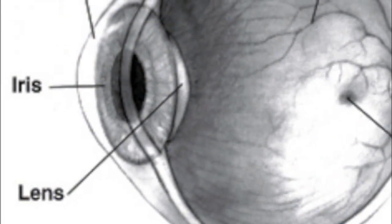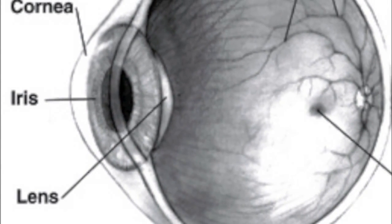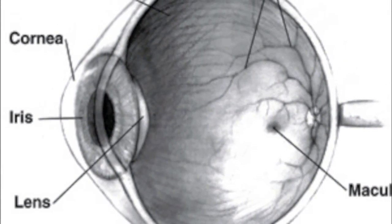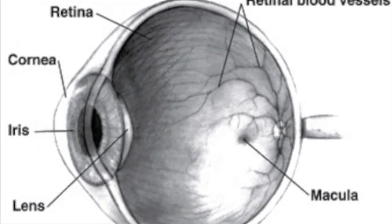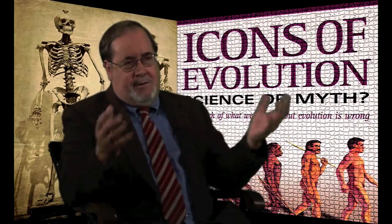One problem with relying on homology as evidence for Darwin's theory is that we have some things that appear to be homologous but which we know or believe do not come from a common ancestor. For example, the human eye and the eye of an octopus are actually quite similar, and yet nobody believes that the common ancestor of humans and octopuses had an eye like that. There are actually many such cases in the biological world.